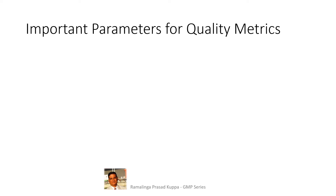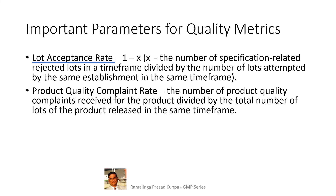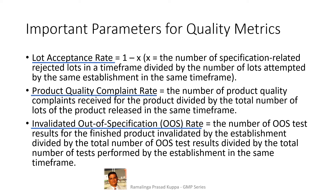Important parameters for quality metrics: Lot acceptance rate is 1 minus x, where x is the number of specification-related rejected lots in a time frame divided by the number of lots attempted by the same establishment in the same time frame. Product quality complaint rate is the number of product quality complaints received for the product divided by the total number of lots of the product released in the same time frame. Invalidated out-of-specification (OOS) rate is the number of OOS test results for the finished product invalidated by the establishment divided by the total number of OOS test results, divided by the total number of tests performed by the establishment in the same time frame.